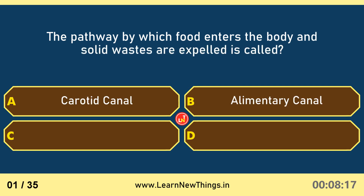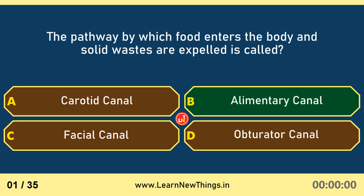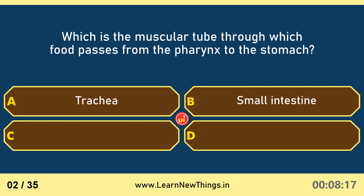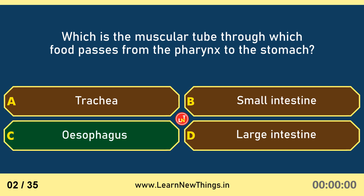The pathway by which food enters the body and solid waste is excreted is called the alimentary canal. The esophagus is the muscular tube through which food passes from the pharynx to the stomach.